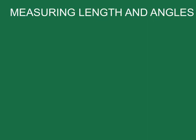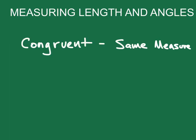The first word I want to talk about is the word congruent. The word congruent indicates that two things have the same measure. We're going to be talking about two things that have the same length and the same angle measure. We're going to use the symbol for congruent, which is an equal sign with a tilde on top.